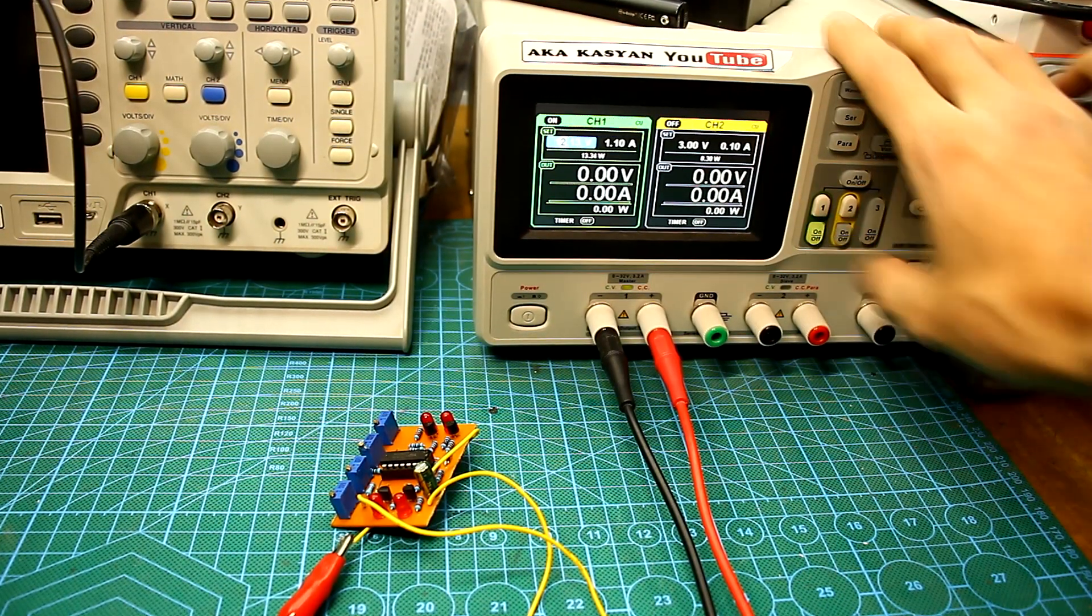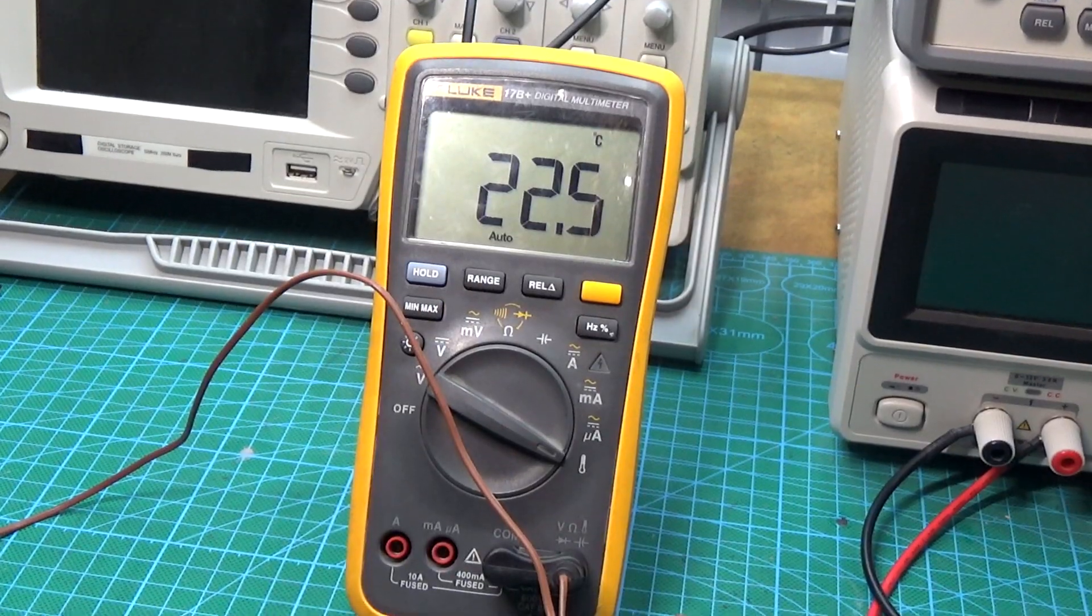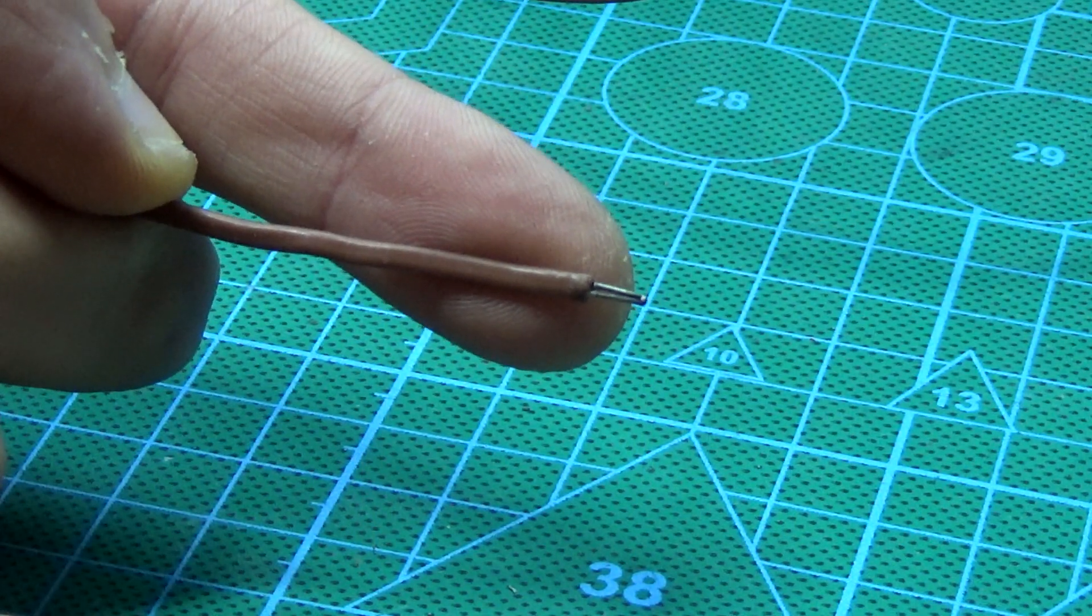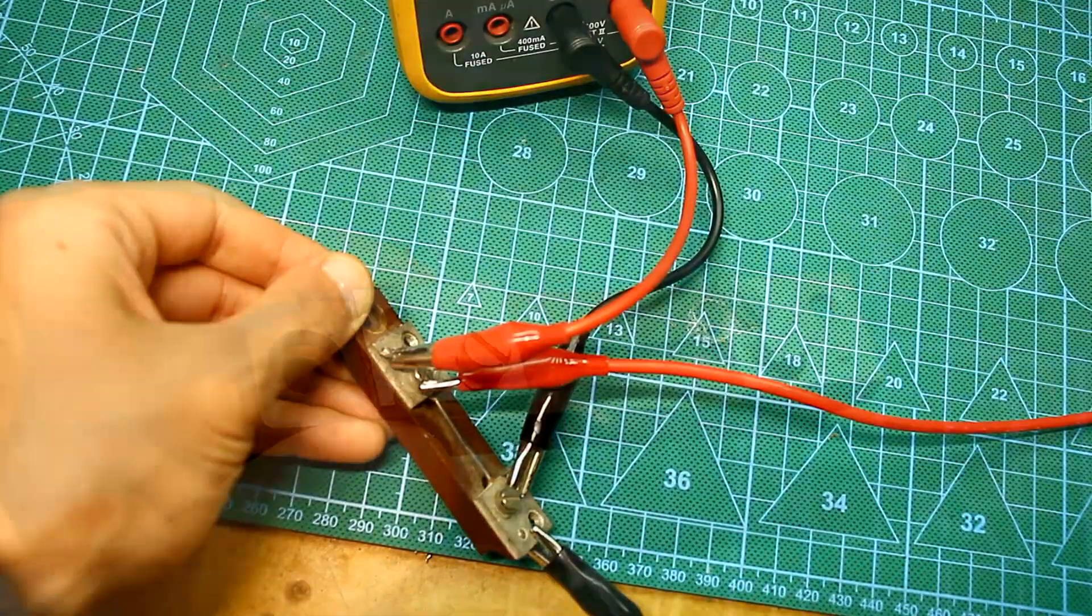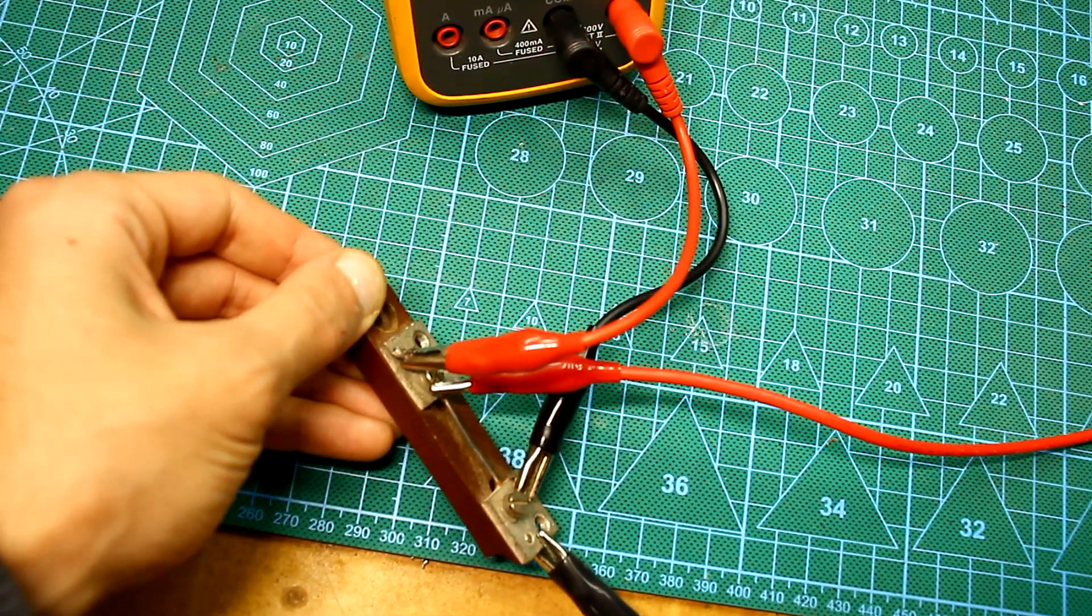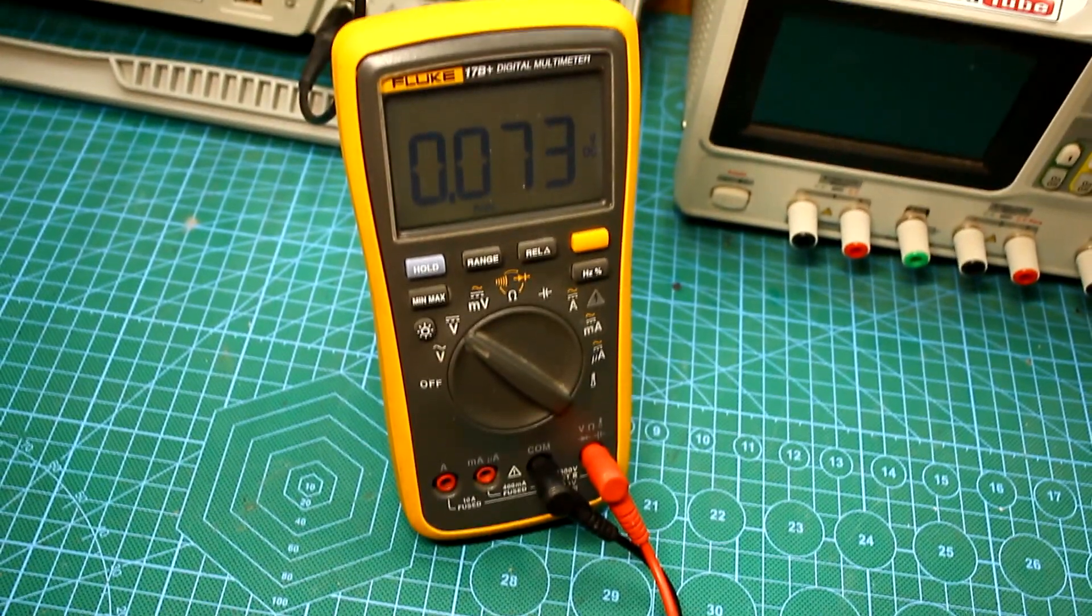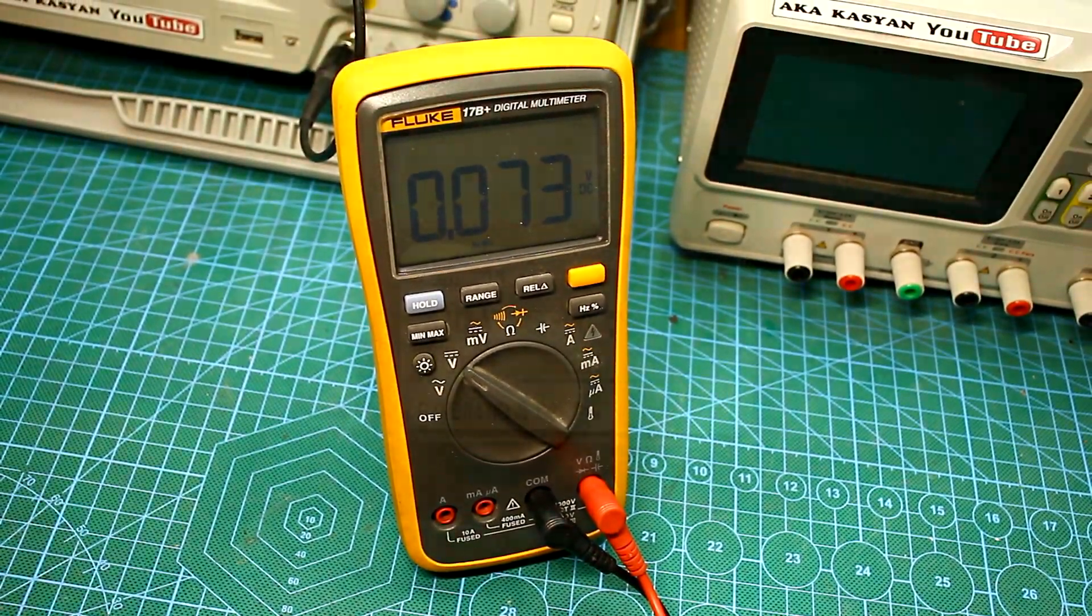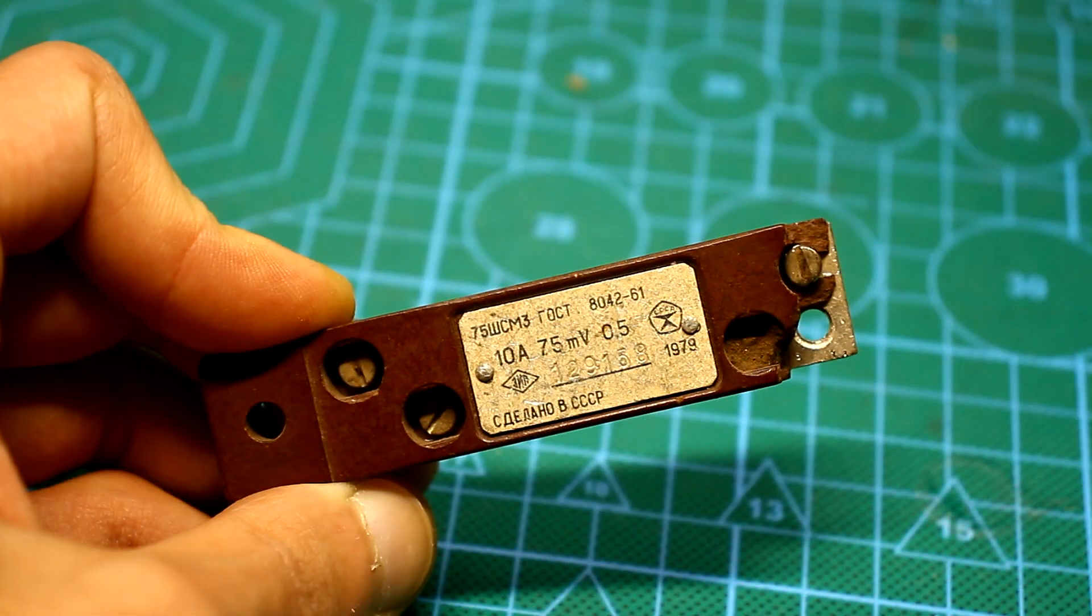Adjustment. For complete setup, you will need a laboratory power supply, an exemplary thermometer with a thermocouple and a current sensor. In my case, current sensor is a 10A shunt. When a current of 10A flows through it, the drop on the shunt will be 75mV. As a rule, most shunts have just such a drop. The difference can only be in the rated current.